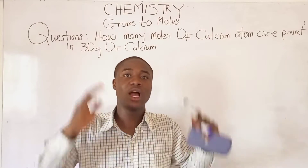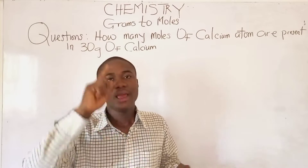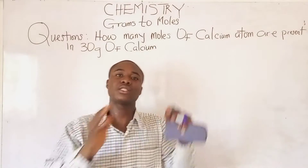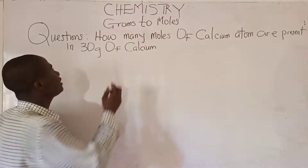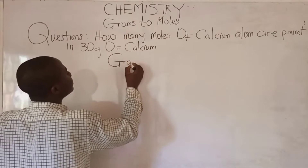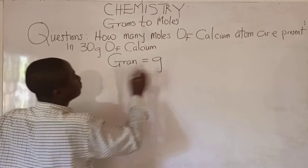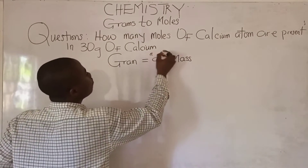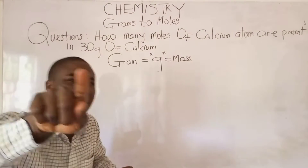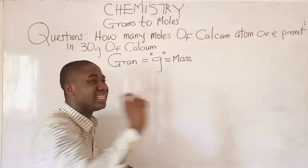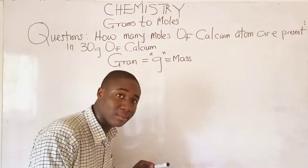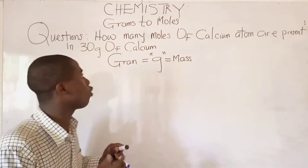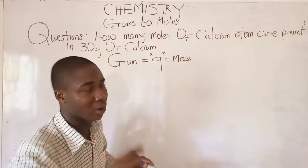Welcome back to a new video episode on Chemistry Made Easy. In today's video lesson I'll be teaching on how to convert grams to moles. It must be noted that grams is expressed with the symbol g, and grams is the same as saying mass. In chemistry, mass is most times expressed in grams, not in kilograms.